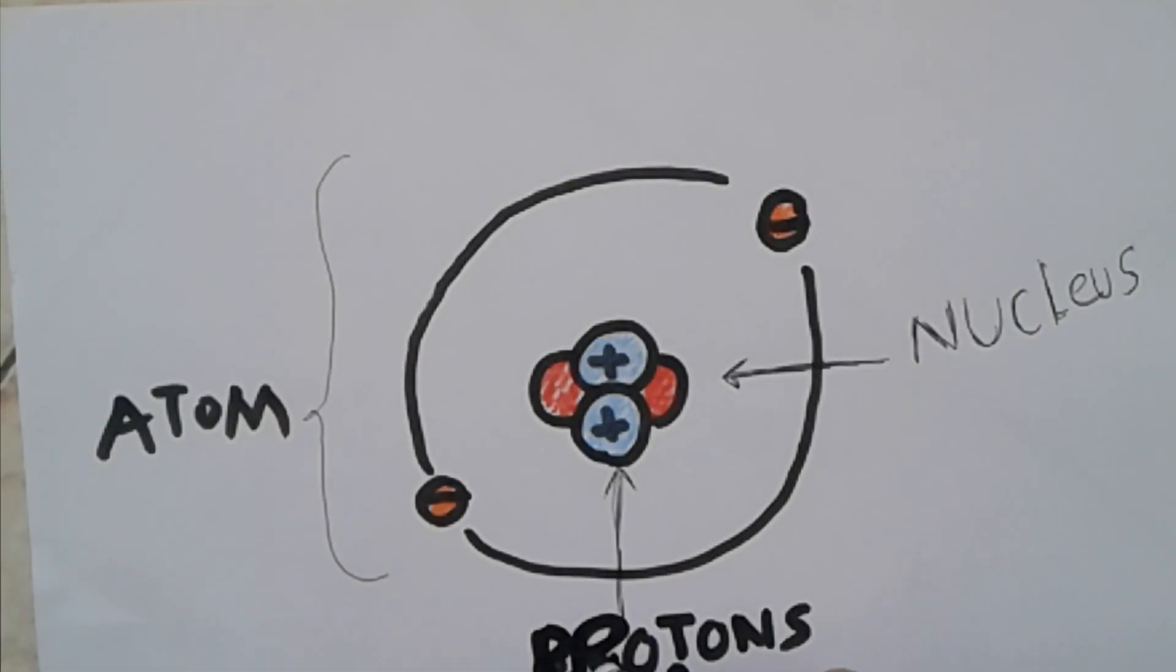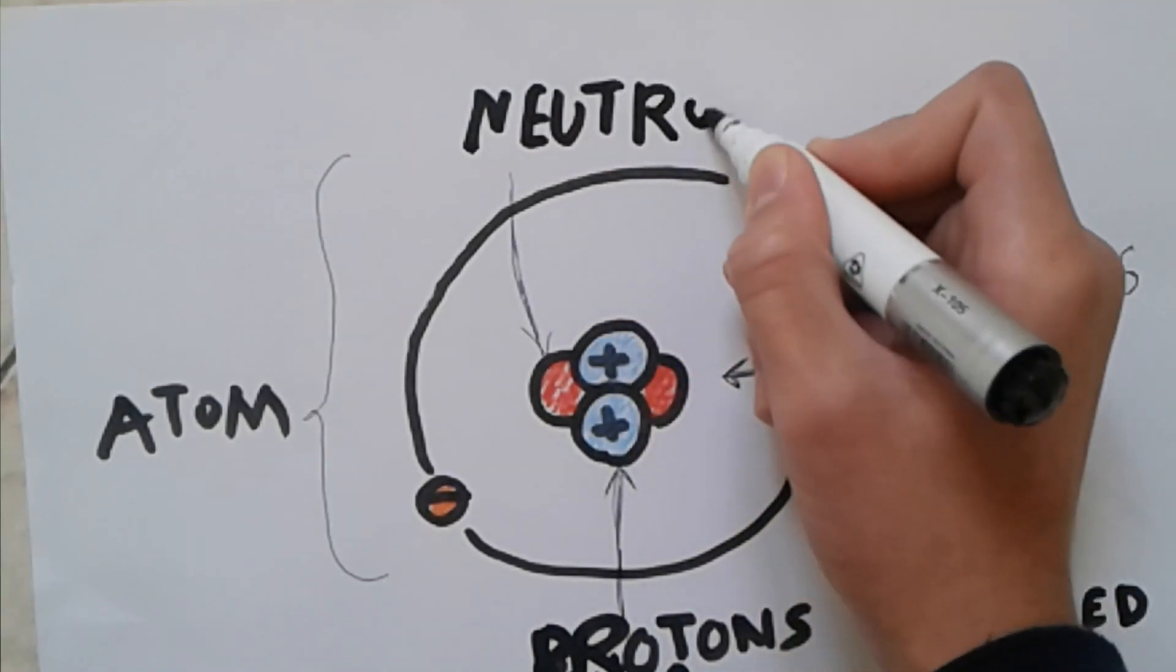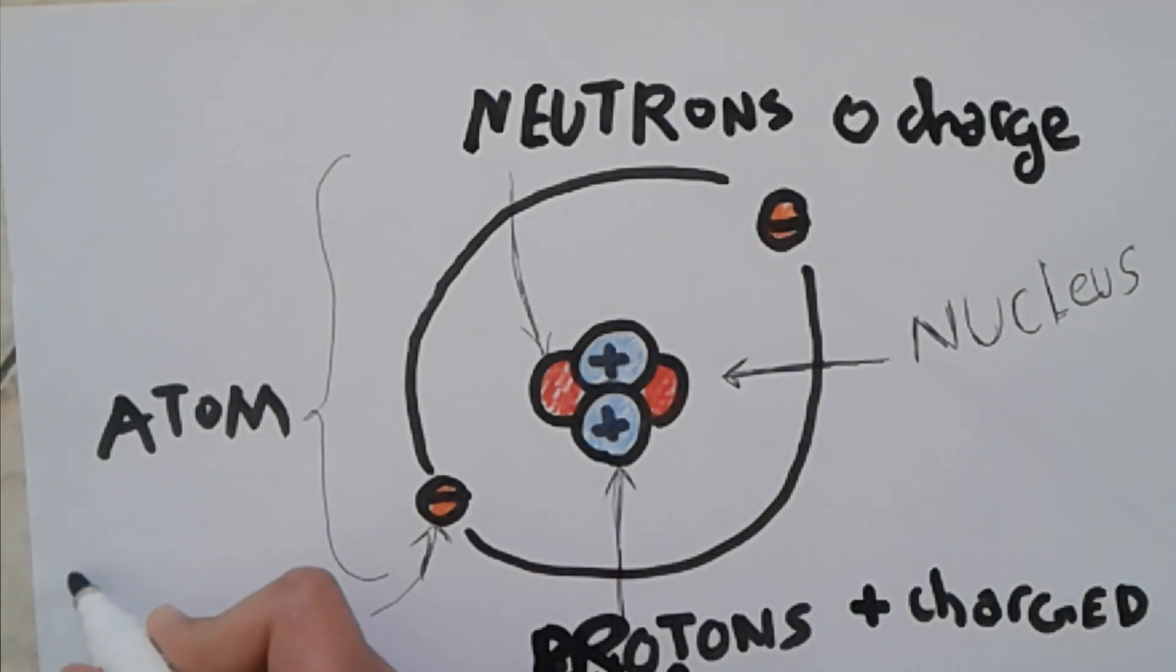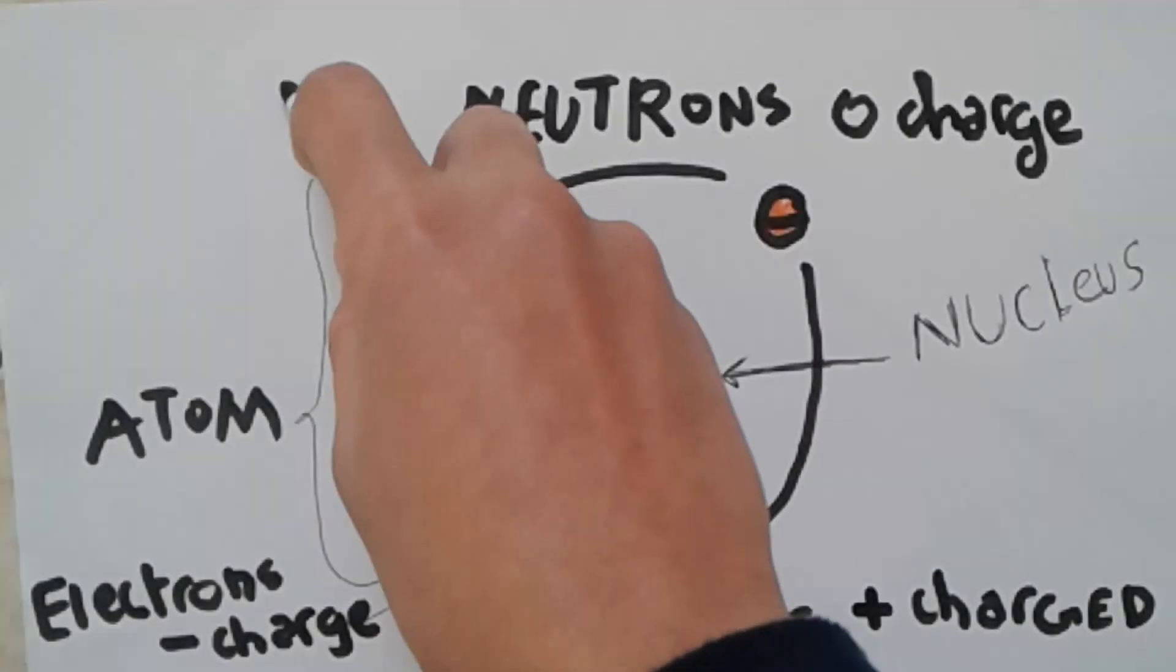Protons are positively charged and neutrons are neutral, which means they have no charge. Outside the nucleus there are electrons orbiting, where fly particles negatively charged under the name of electrons. Actually, this is not an atom.